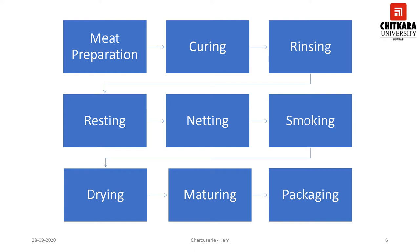The first step is meat preparation, which includes removing the hind leg of pork from the carcass; it then has to be cleaned and the skin can be removed according to requirement. Next is curing, which is one of the most important steps when preparing meat for charcuterie, as it is meant to prevent bacterial contamination. Curing can be of two kinds: dry cured and wet cured.